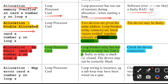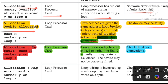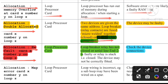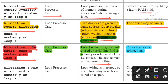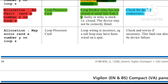The next faults visible in the menu: 'Allocation double allocated' — bad connection or faulty device, two devices given the same address. 'Allocation HW fault card X' — the device may not be correctly fitted. 'Allocation map error, card X, number Y, on loop Z' — another allocation-related fault visible in the Gent panel menu.